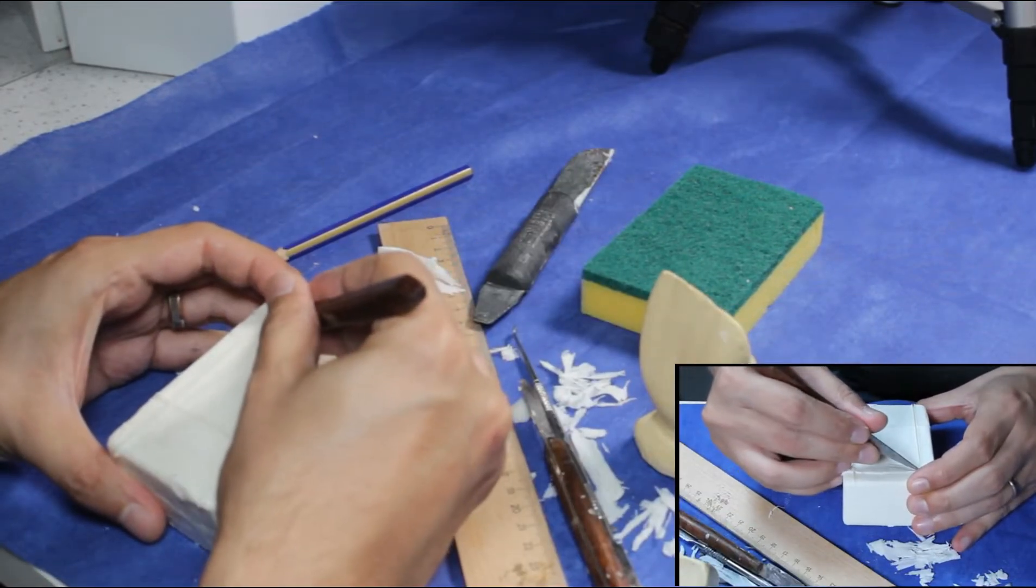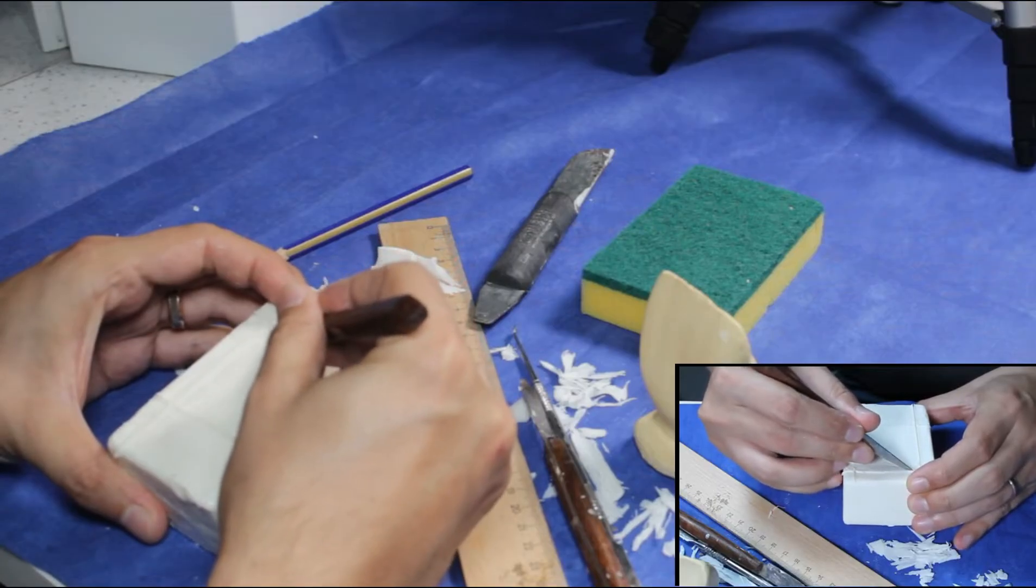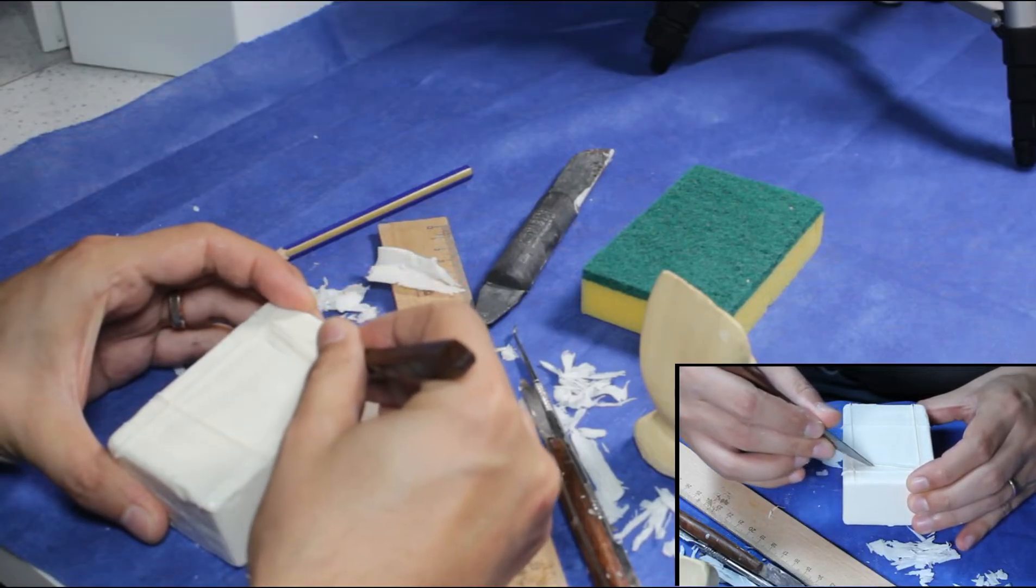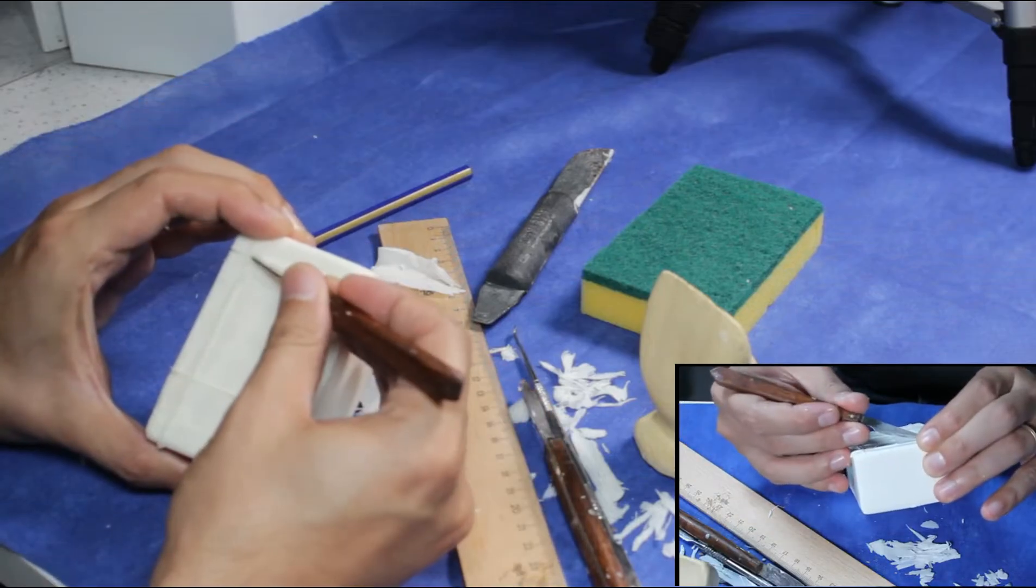When we look labial, from mesial to the distal, the crown length shortens. According to this, I draw the incisal line.